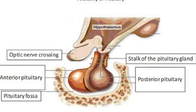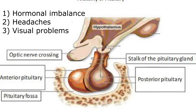For example, if it compresses the hypothalamus or if there is a mass in the pituitary gland, you're going to have hormonal imbalance. You can have headaches. If it compresses the optic chiasm, you can have visual problems.